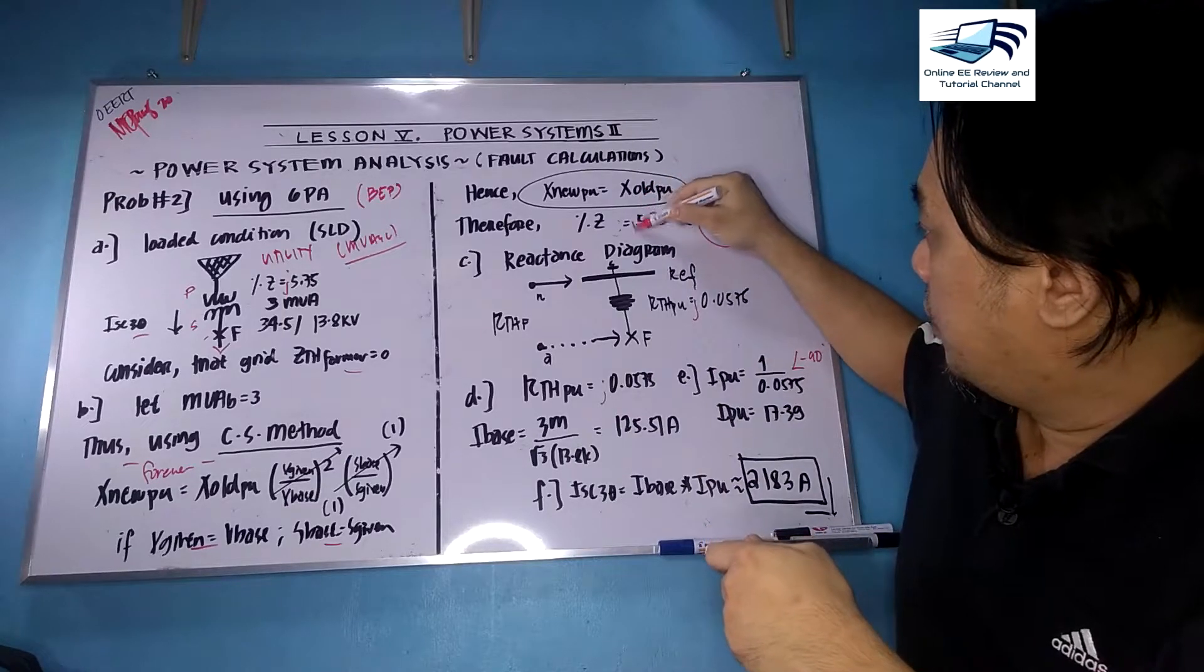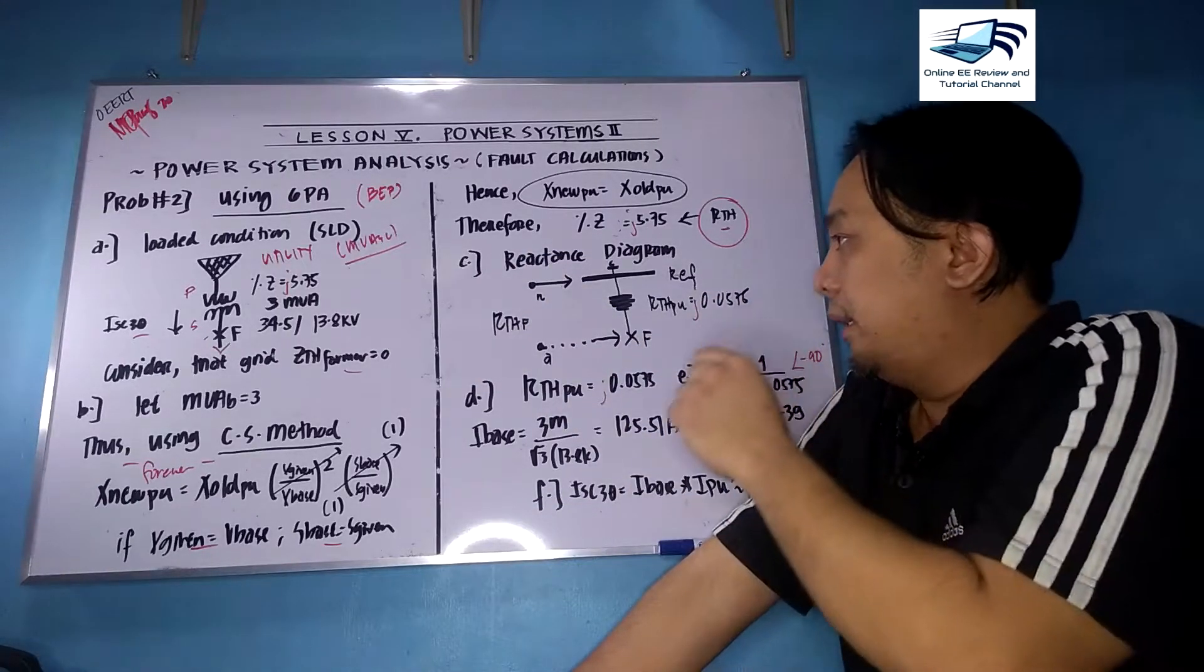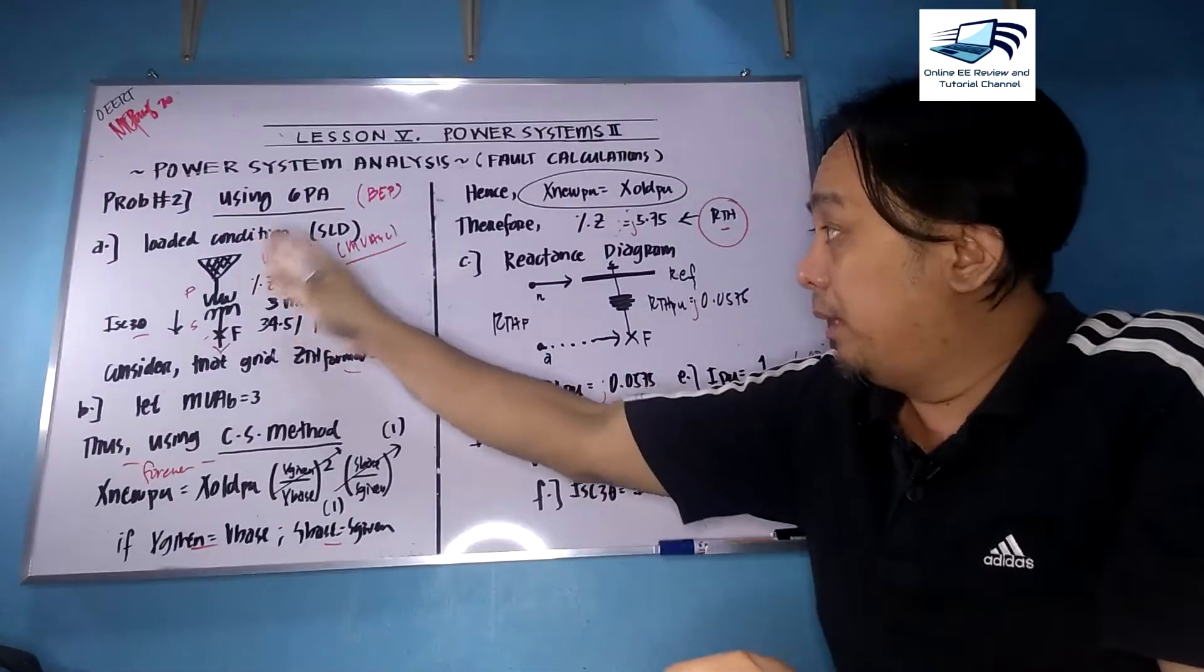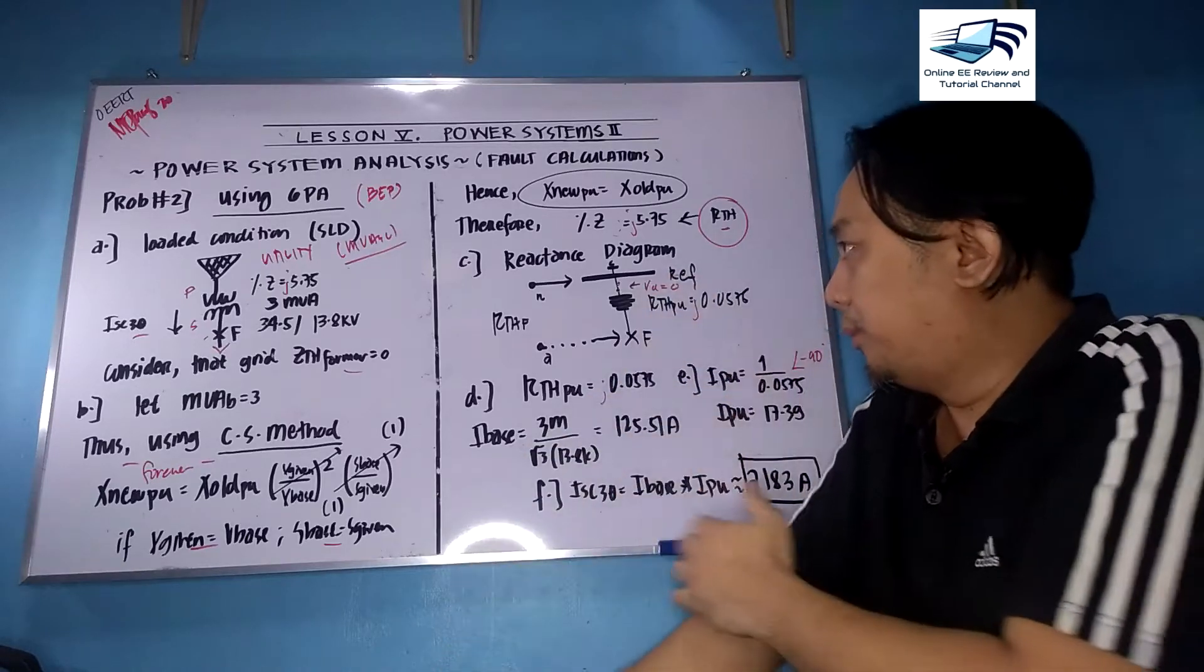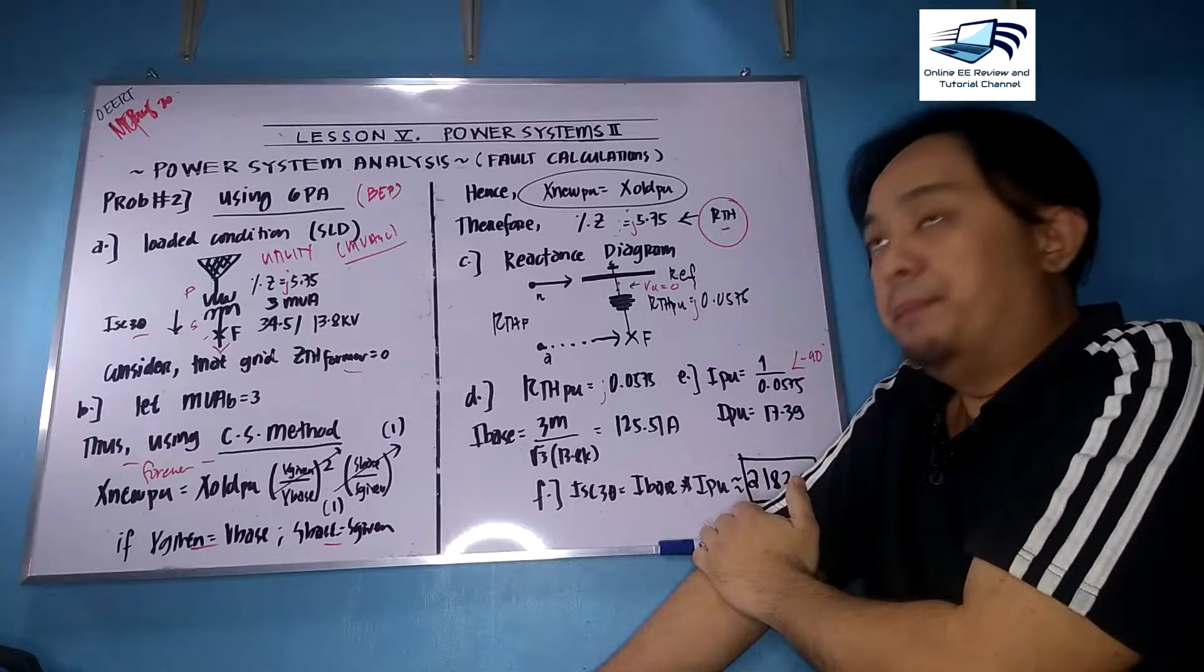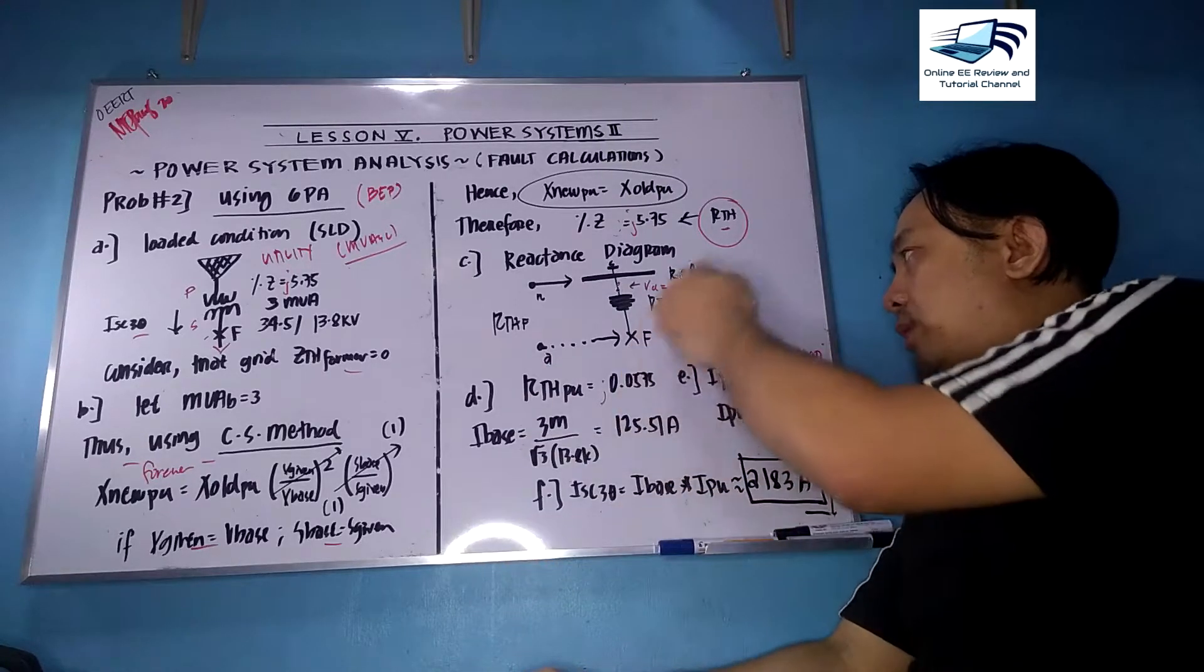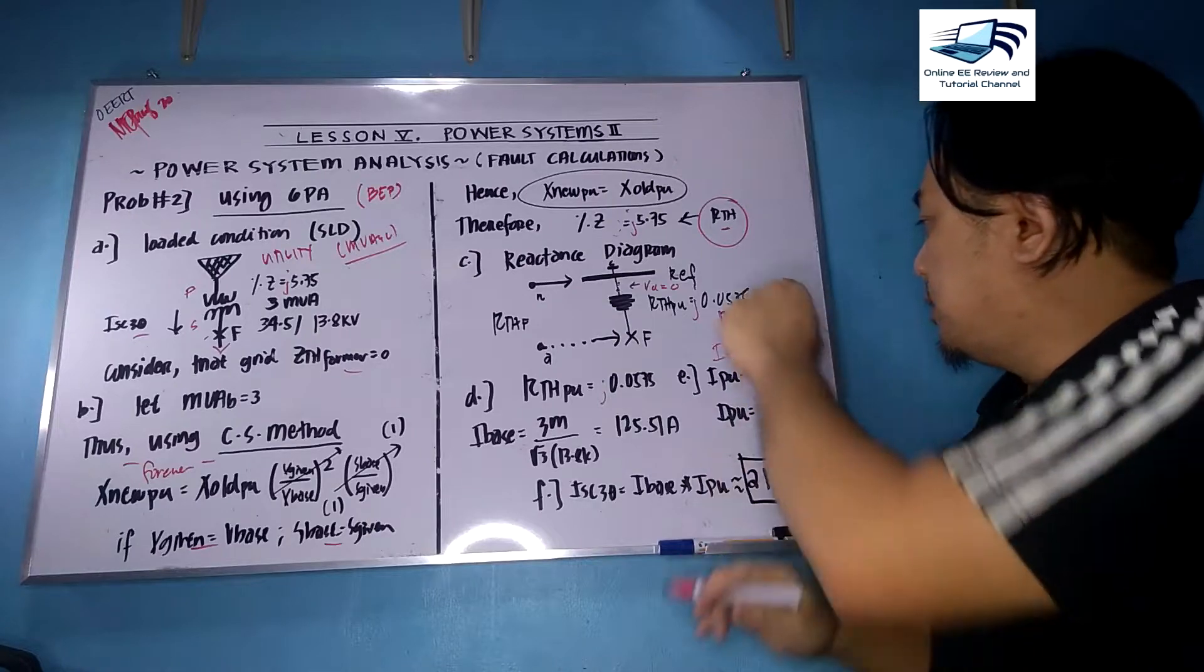The reactance diagram: we short circuit all sources and place it on your common reference and model it as an impedance or resistance. In this case, there's no MVA short circuit, so automatically your utility voltage is zero. Without any former impedance reactance, your RTH is 0.0575, and you need to measure Thevenin's here at this point N to A and get the I_PU or your Norton's current. RTH, the resistance, is 0.0575.